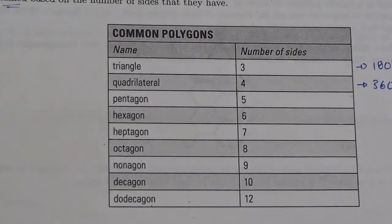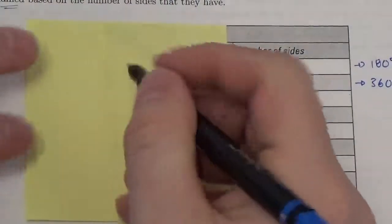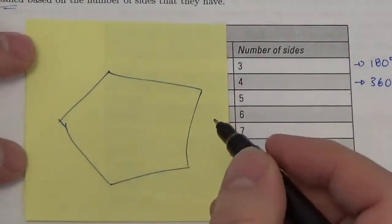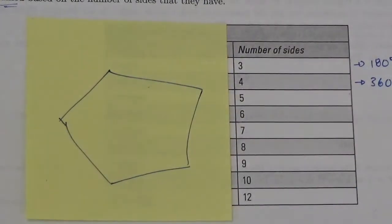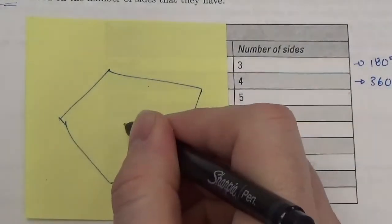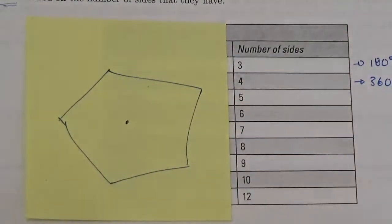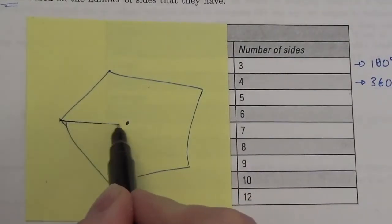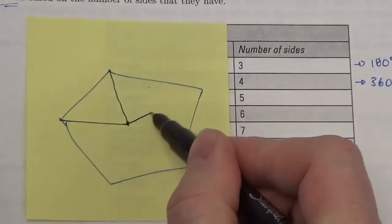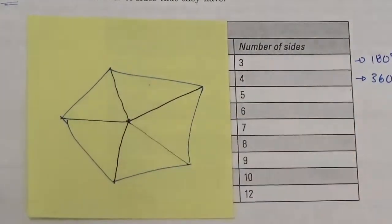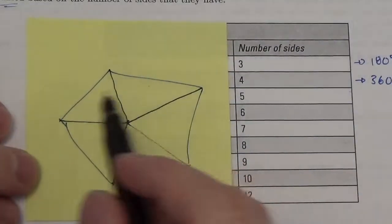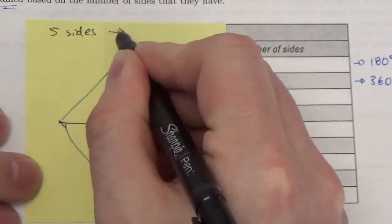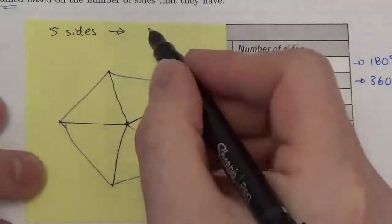I want to show you just a little example — let's talk about the pentagon. So let's say I draw a pentagon — it's got to have five sides. What we can do here is draw a point in the center or middle of this shape. Then I'm going to connect all of the vertices to that center. Because this was a pentagon, I had five sides, which means that when I connected all of those vertices to the center, I get five triangles.